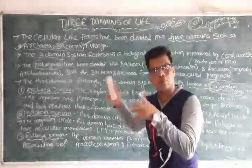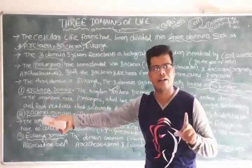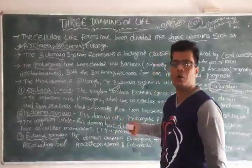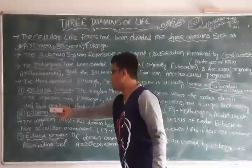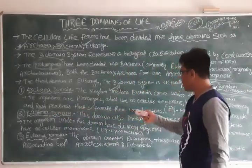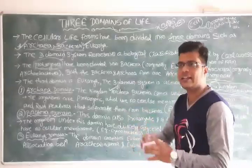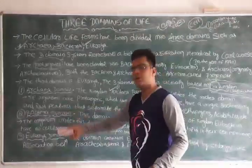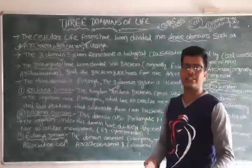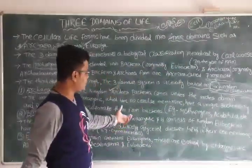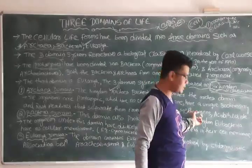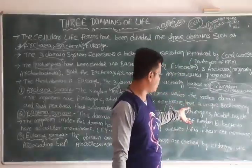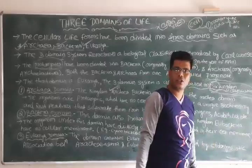Because the Archaea and bacteria come from one ancestor, they are related. However, the Archaea domain has unique features that bacteria do not have. They have different RNA features — Ribonucleic acid features — that separate them from the bacteria. Under the Archaea domain, examples include methanogens, acidophiles, and some other unicellular organisms.